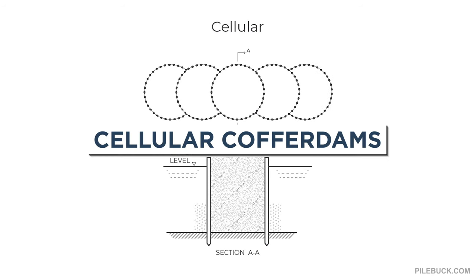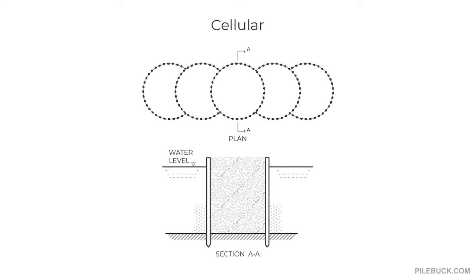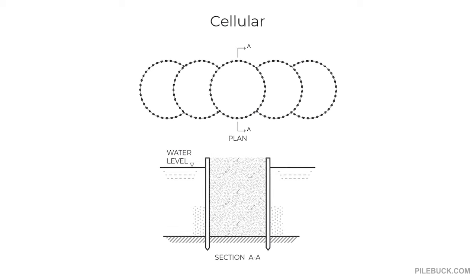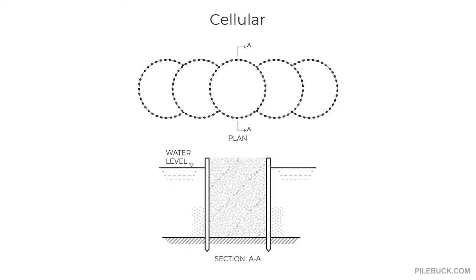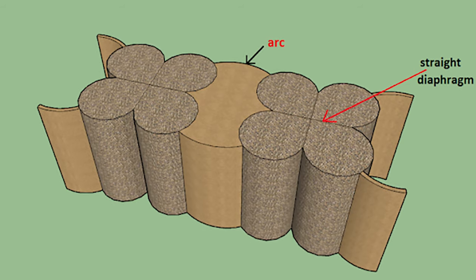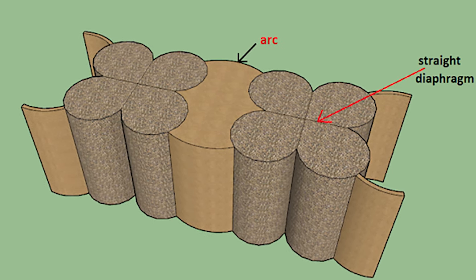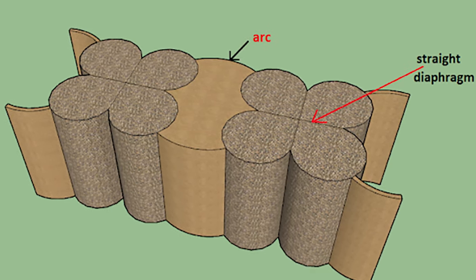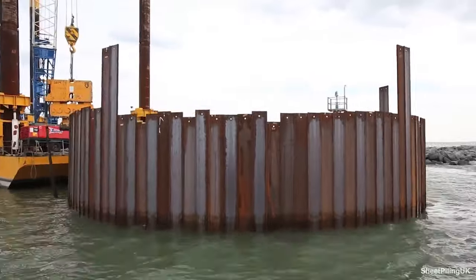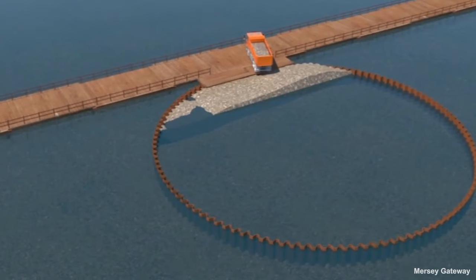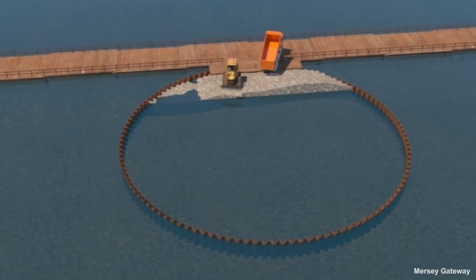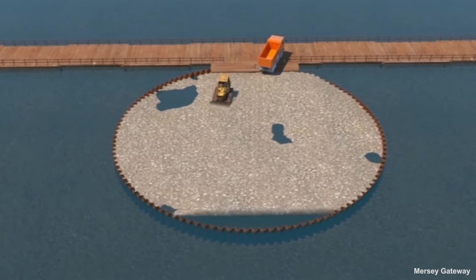Cellular coffer dams: For large excavations, the use of cross-excavation bracing may not be feasible. Cellular coffer dams consist of interlocking steel plates designed to resist lateral forces without the need for bracing. There are two types — diaphragm and circular. Diaphragm cellular coffer dams have circular arcs at the sides attached to straight diaphragm walls. Circular cellular coffer dams have large circular cells connected using smaller circular cells. The cells are filled, usually with earth or concrete, and a waterproof membrane covers the cells before the whole coffer dam is placed and secured.